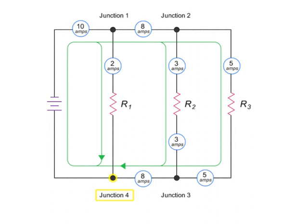At junction 4, the 2 amps and 8 amps currents recombine to equal the 10 amps of the original source current. An important difference in a parallel circuit is that voltage is the same throughout the circuit.